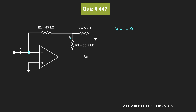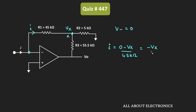Let's assume this node is called x and the voltage at this node is Vx. Since the op-amp is ideal, no current flows into the op-amp terminal, so the current I will flow in this direction. We can write: I = (0 − Vx) / 45 kΩ, or I = −Vx / 45 kΩ.